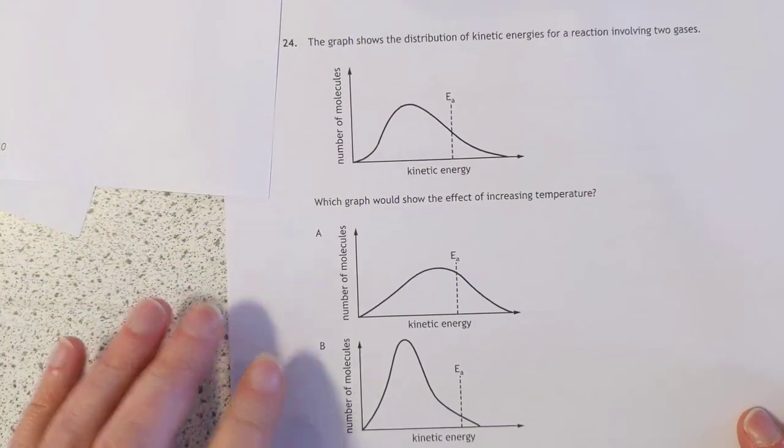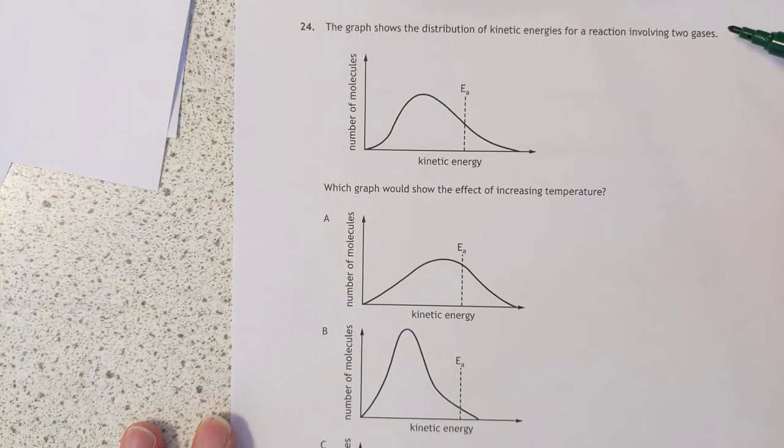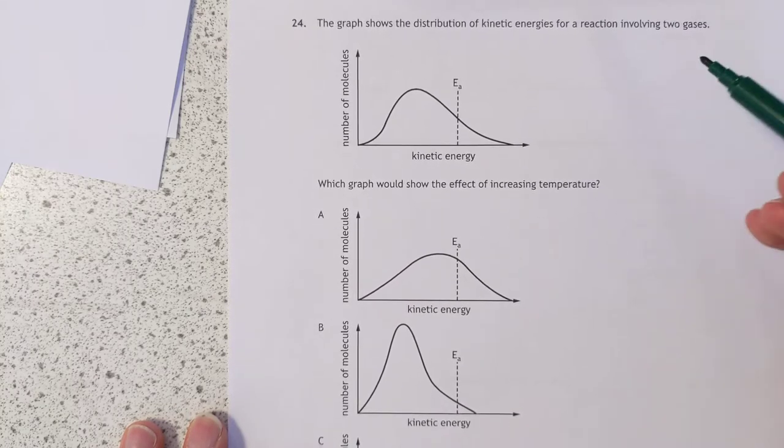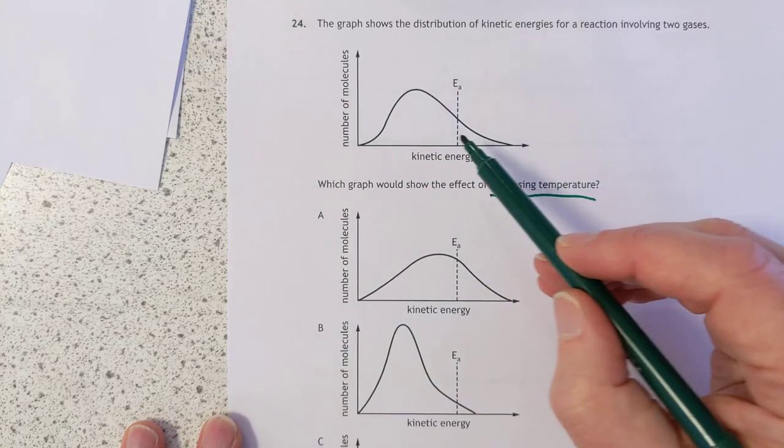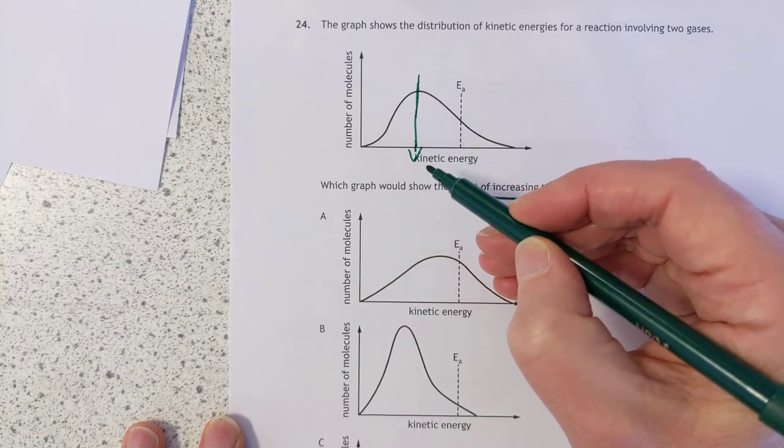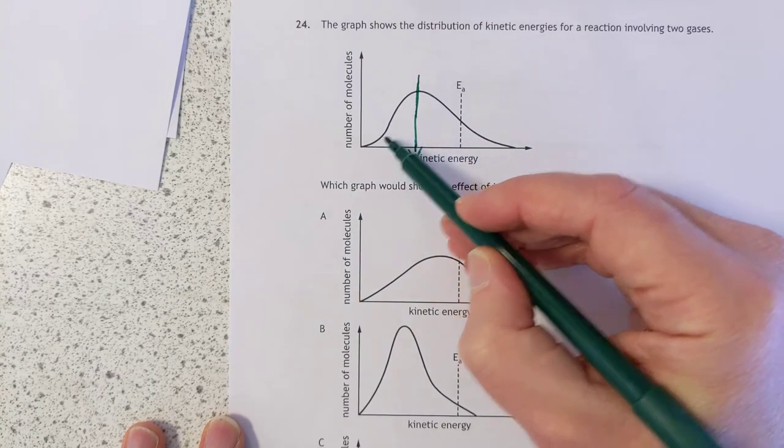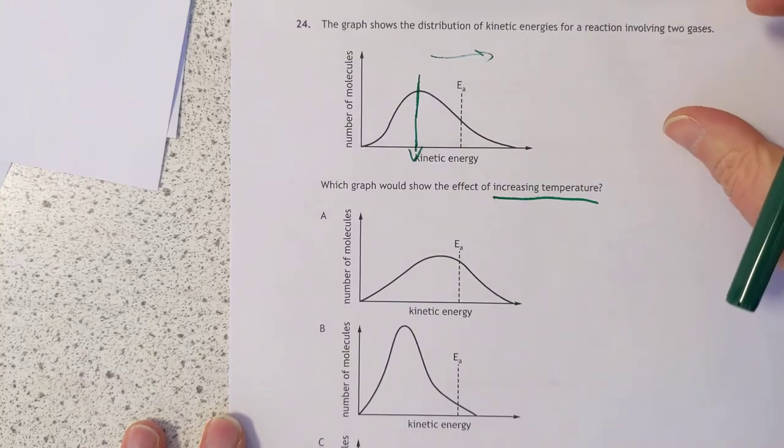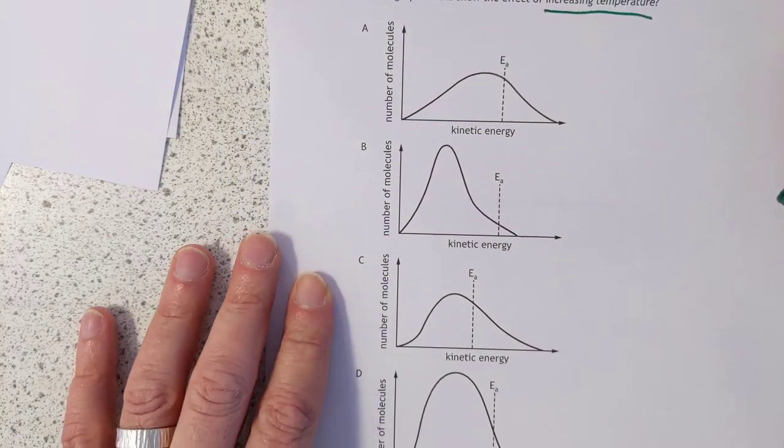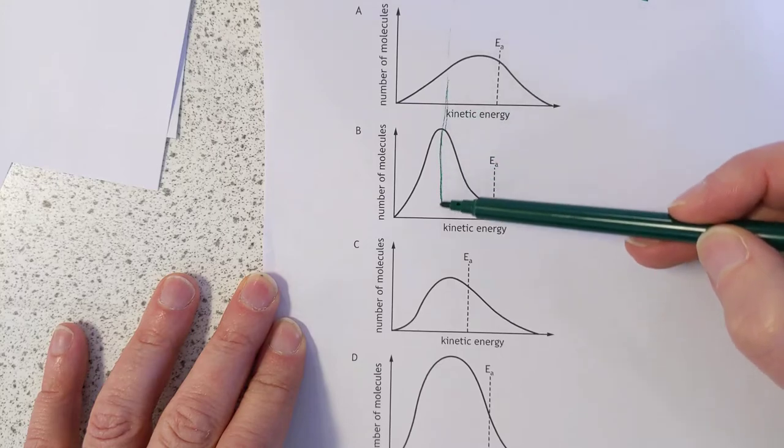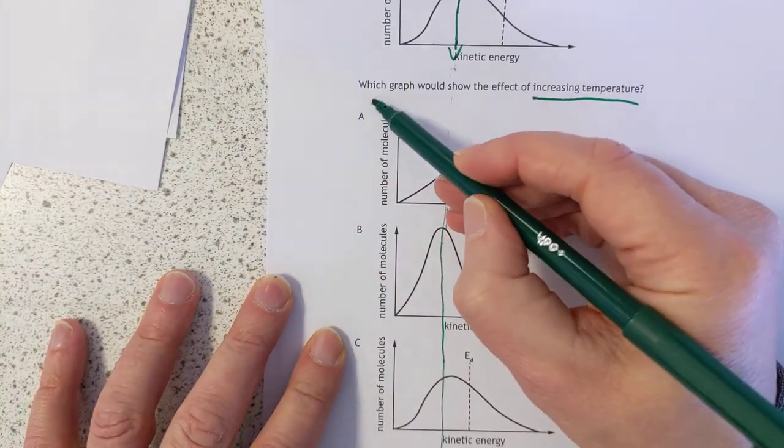Question 24: The graph shows the distribution of kinetic energies for a reaction involving two gases. Which graph would show the effect of increasing the temperature? If you increase the temperature, you will shift the apex here. It represents this point on kinetic energy which corresponds to a certain temperature. If you're going to increase the temperature, then your apex will need to shift to the right of where we currently have it. We want an apex drifted to the right. Here's where it was before. And I'm pretty sure you can see the only one that's drifting the apex to the right is A.